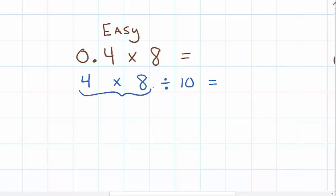4 times 8 gives me 32. Then if I divide that by 10, I move the decimal one place to the left, getting 3.2. So 8 times 0.4, or 0.4 times 8, is 3.2.